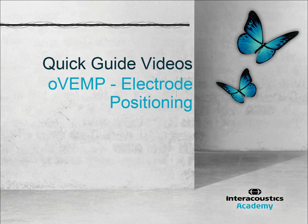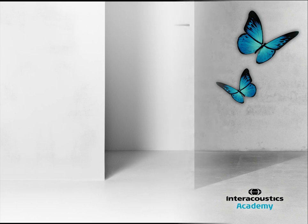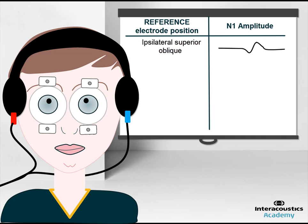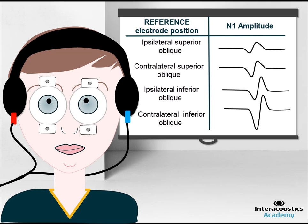This quick guide video provides an overview of how to position the electrodes when performing OVEMP testing. In 2007, Todd et al. demonstrated that OVEMPs can be recorded from several different electrode sites, but the largest N10 amplitudes are obtained when recording from the contralateral inferior oblique muscle to the ear which is being stimulated.